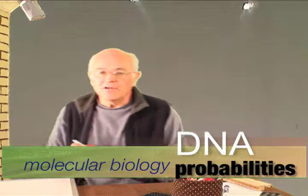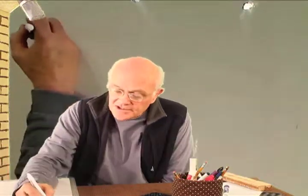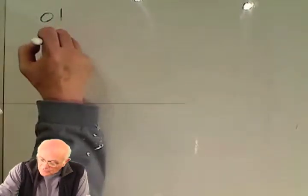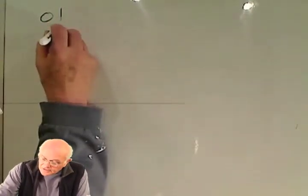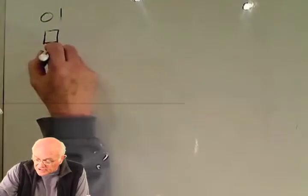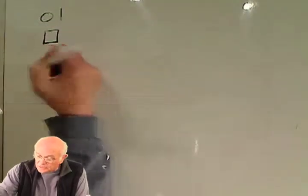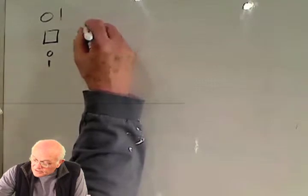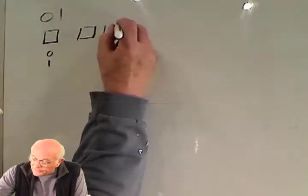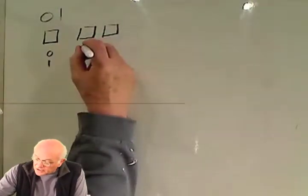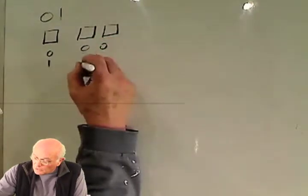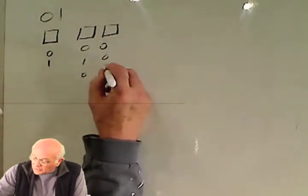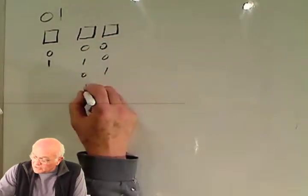Let's talk about the binary code. The binary code consists of 0s and 1s. If we have one digit, the option is either a 0 or a 1. If you have two, the possibilities are 00, 10, 01, or 11.